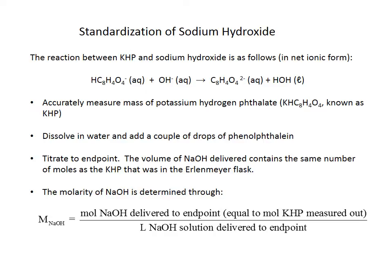We're going to put the KHP into the Erlenmeyer flask with some water — it doesn't matter exactly how much water — and a couple drops of phenolphthalein. Then we titrate until the phenolphthalein turns just barely pink. The volume of sodium hydroxide delivered out of the burette contains the same number of moles as the KHP in the flask. So I can find the molarity of sodium hydroxide by taking the moles of NaOH delivered to the endpoint — which equals the moles of KHP measured out — and dividing by the number of liters of sodium hydroxide solution delivered to the endpoint.